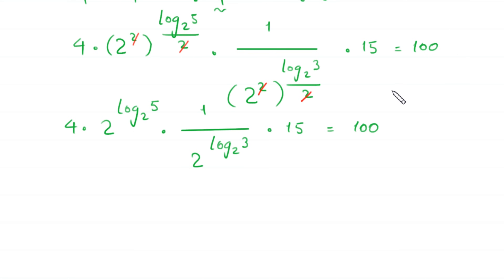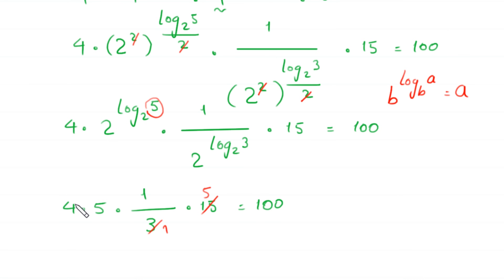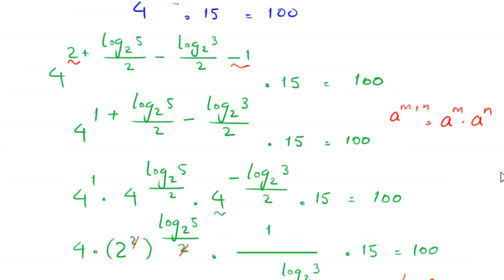Using the log property b to the power log base b of a is equal to a: 2 to the power log base 2 of 5 is equal to 5, and 1 over 2 to the power log base 2 of 3 is equal to 1 over 3. So the expression becomes 4 times 5 times 1 over 3 times 15 is equal to 100. Simplifying: 4 times 5 is 20, times 15 over 3 is 100. The left hand side equals the right hand side, so it is proved that x equals 2 plus log base 2 of 5 over 2, minus log base 2 of 3 over 2.